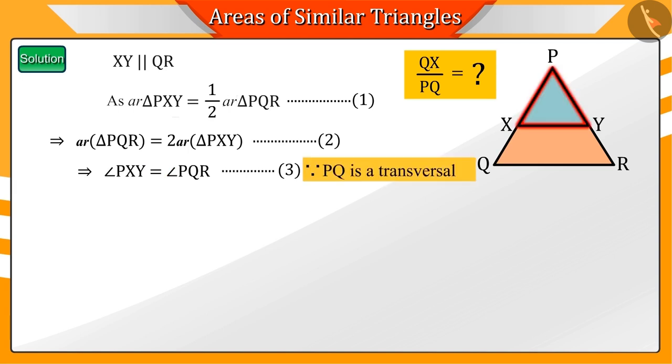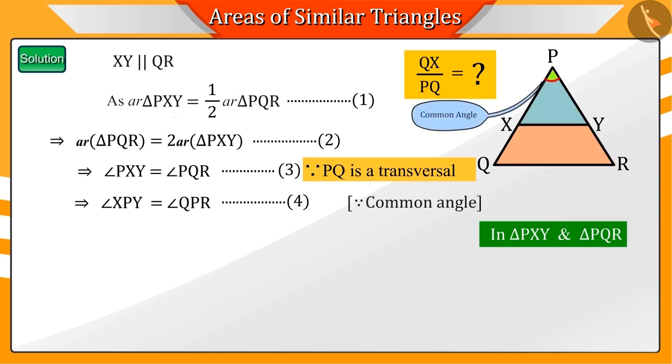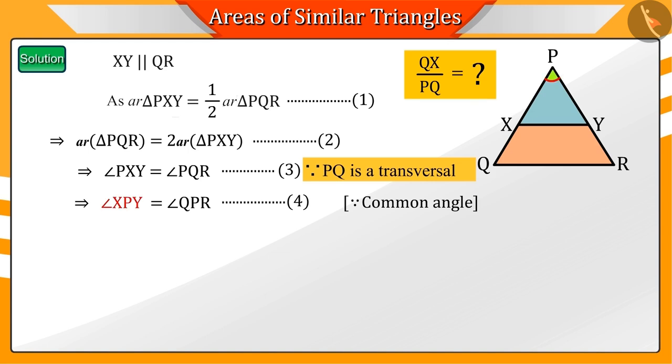Can you say if any other angle of triangles PXY and PQR are equal? Correct! In triangle PXY and triangle PQR, angle P is the common angle, so angle XPY will be equal to the angle QPR.